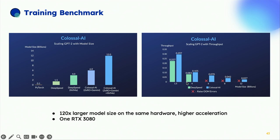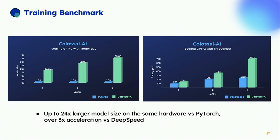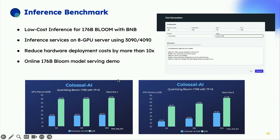Now for benchmark use cases. For large AI model training, GPT-2 benefits greatly from the N-dimensional parallelism system — we can train up to 24 times larger models on the same hardware compared to PyTorch and get over 3x acceleration compared with DeepSpeed. This is on an 80 gigabyte A100, scaling from one to four GPUs.